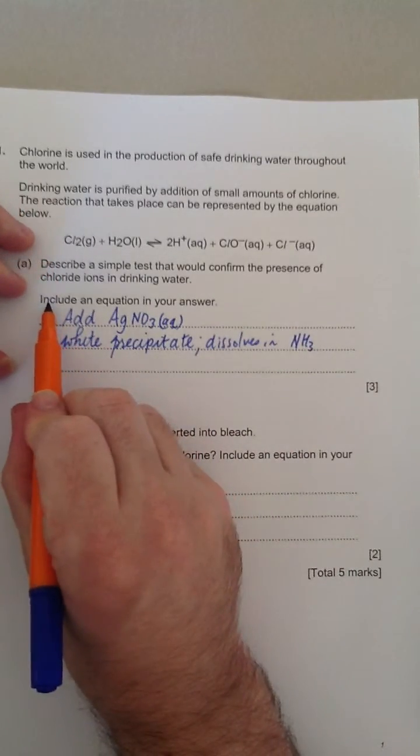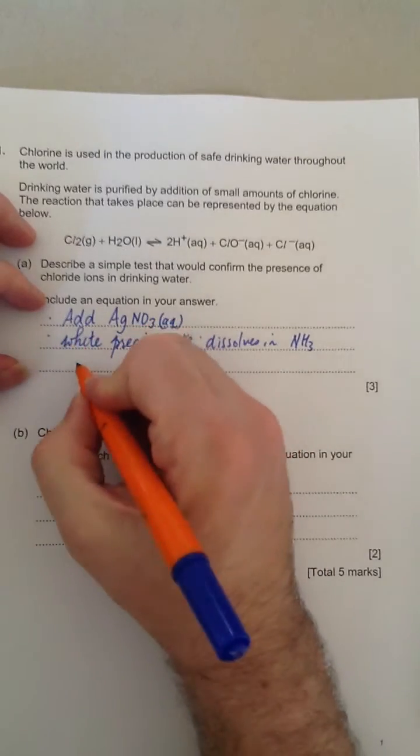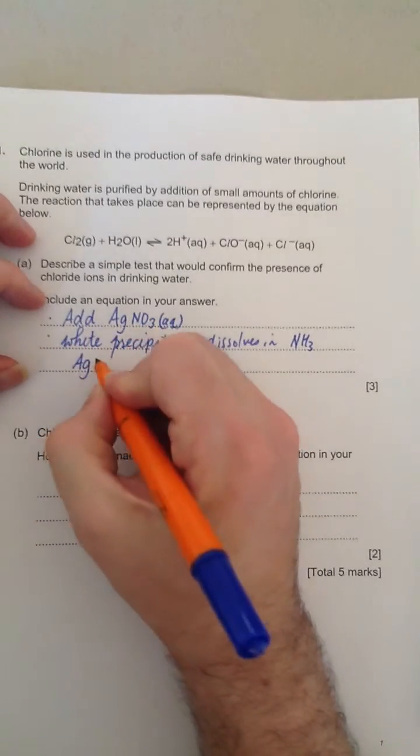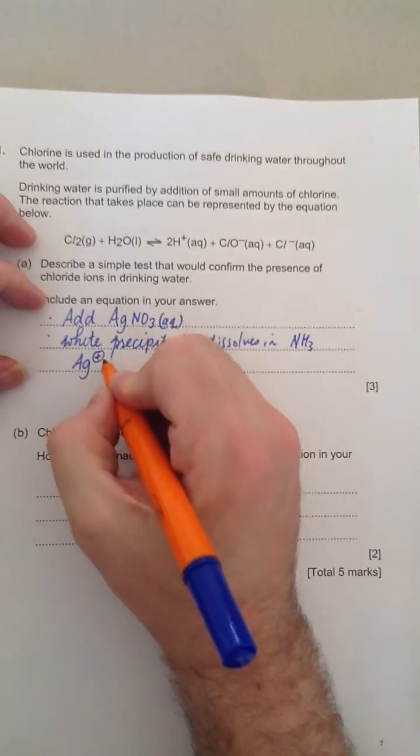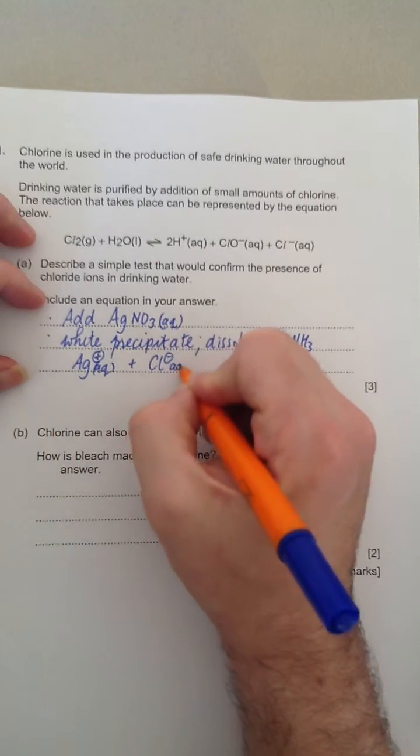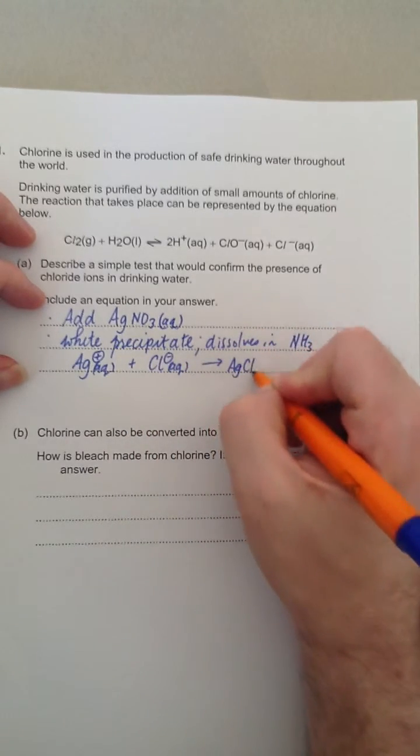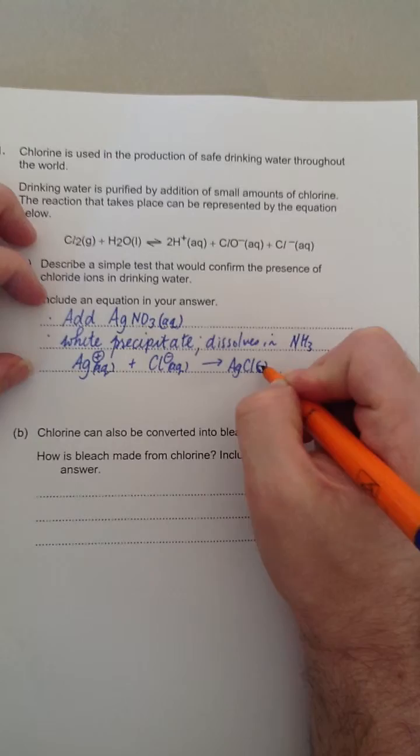The question then concludes by saying, include an equation in your answer. So the ionic equation would be your silver ions, Ag plus aqueous plus Cl minus aqueous goes to AgCl solid. That's an S.